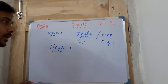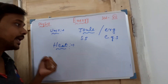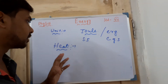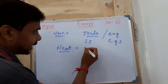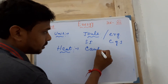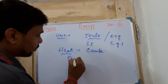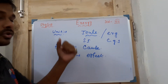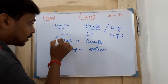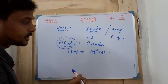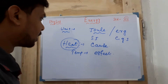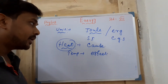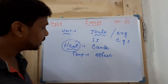Heat is also one type of energy, as I have already told in the previous video. Temperature is the measurement or calculation of heat. You can say heat is the cause and temperature is the effect — temperature develops because of heat. When you calculate body temperature with a thermometer, it means some amount of heat energy is present in the body, and that is why temperature is generated.